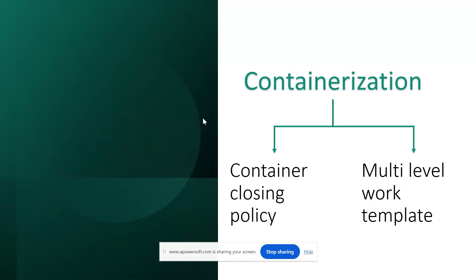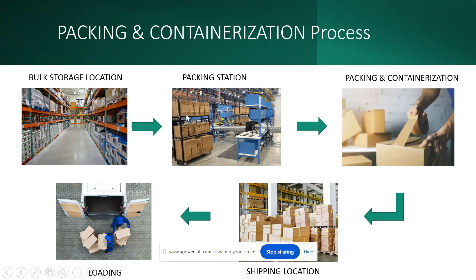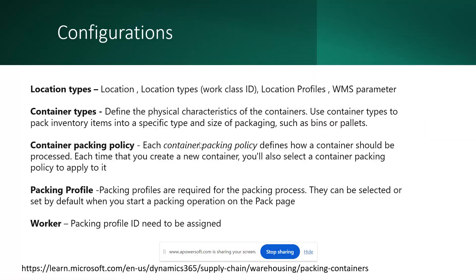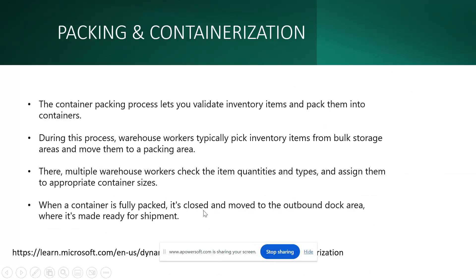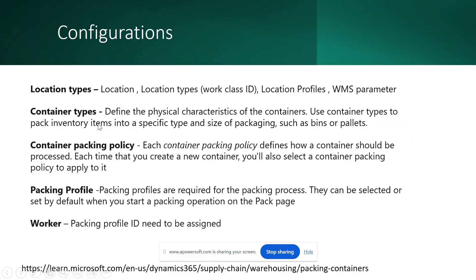Warehouse workers pick inventory items from bulk storage and move them to a packing area. Multiple workers check the item quantities and types and assign them to appropriate container sizes. When a container is fully packed, it is closed and moved to the outbound dock area where it's made ready for shipment. Once the container is packed, it is moved to the shipping location and loaded into the truck.